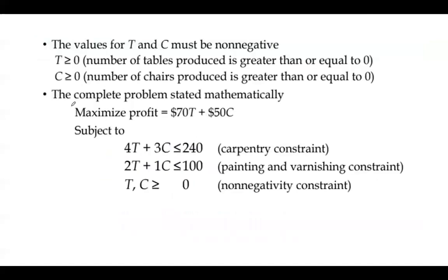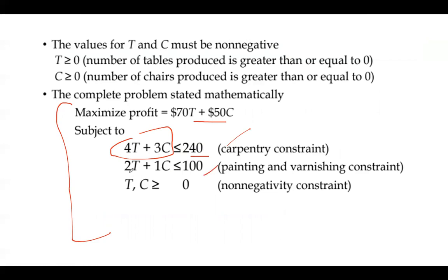The constraint equations are: carpentry hours consumed, 4t + 3c, must be less than or equal to 240; painting hours, 2t + 1c, must be less than or equal to 100. Also, t and c must be greater than or equal to zero. These are called non-negativity constraints, because the number of tables and chairs produced cannot be negative.